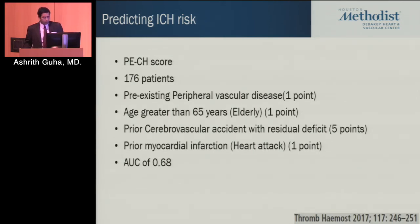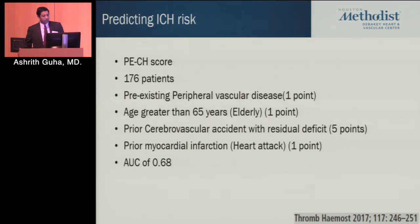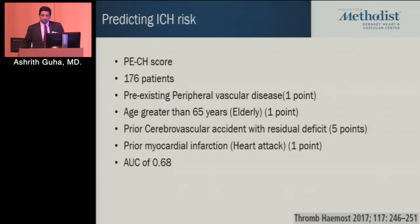One interesting recent development is predicting ICH risk. This is very important in intermediate-risk patients because you're trying to subselect a group that will benefit from thrombolytics without adverse events. A PECH score was developed, incorporating pre-existing peripheral vascular disease, elderly age, previous CVA, and previous MI. The AUC was moderate at best, but the field is moving toward incorporating a risk score for adverse events and benefit — hopefully combining both in determining who may actually benefit from treatment in PE patients.